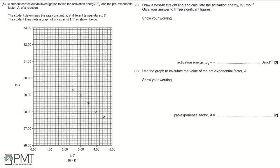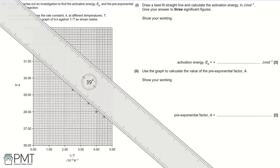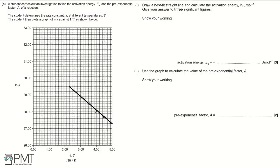Part B: a student investigates activation energy Ea and pre-exponential factor A by determining the rate constant k at different temperatures T, then plots ln k against 1/T. Part 1: draw a best-fit straight line and calculate activation energy in J mol⁻¹ to three significant figures. Draw the best-fit line using a ruler across the data range.